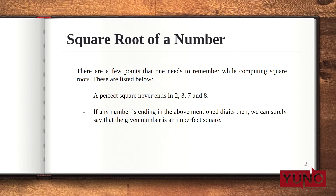Before that, let's see three important points that we need to remember. The first is that we will be only dealing with perfect squares. Second, a perfect square will always end with digits other than 2, 3, 7, and 8. That means if a number is ending with 2, 3, 7, or 8, it is not a perfect square.